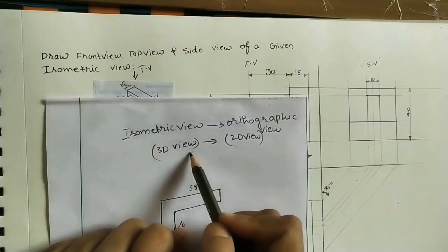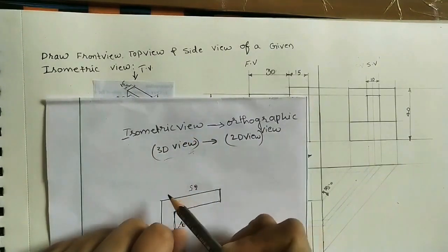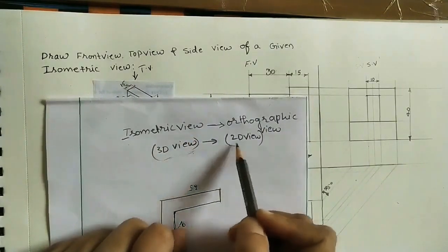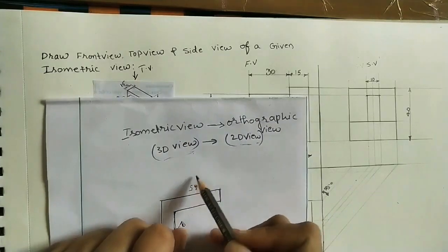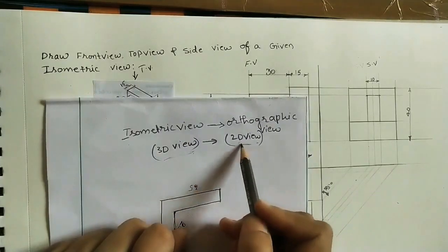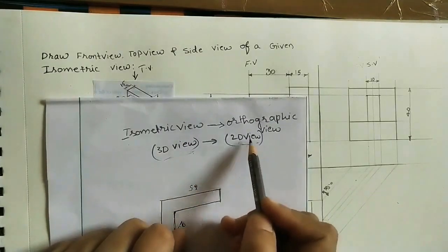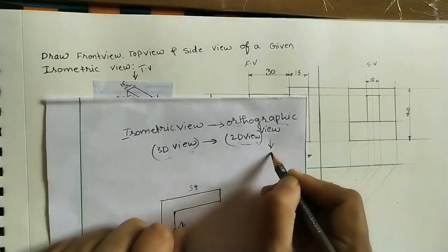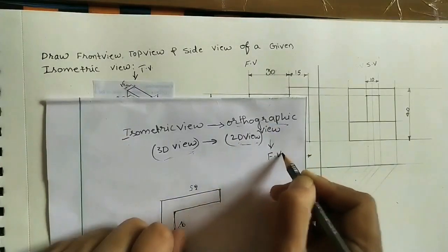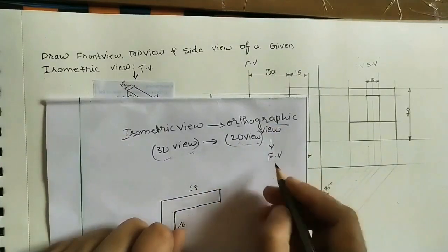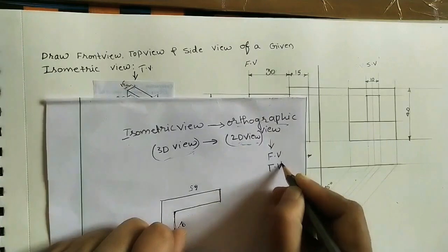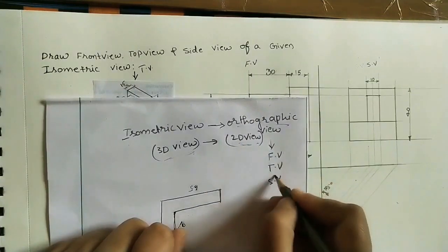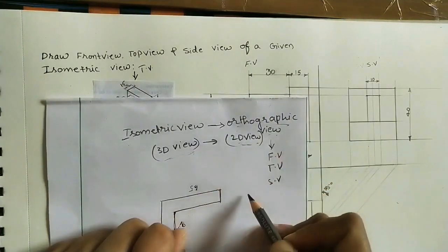Isometric view means it is a 3D view, a 3-dimensional diagram. We are converting this 3D view into a 2D view, that is a 2-dimensional diagram. So 2-dimensional diagram means orthographic view. In orthographic view we are taking front view, top view, and side view. These 3 views we are calling orthographic view.